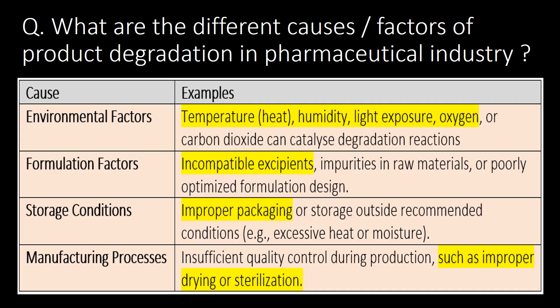Second type: formulation factors — incompatible excipients, impurities in raw materials, or poorly optimized formulation design. Third type: storage conditions — improper packaging or storage outside recommended conditions. And fourth: manufacturing process — insufficient quality control during production, such as improper drying or sterilization, can cause product degradation.